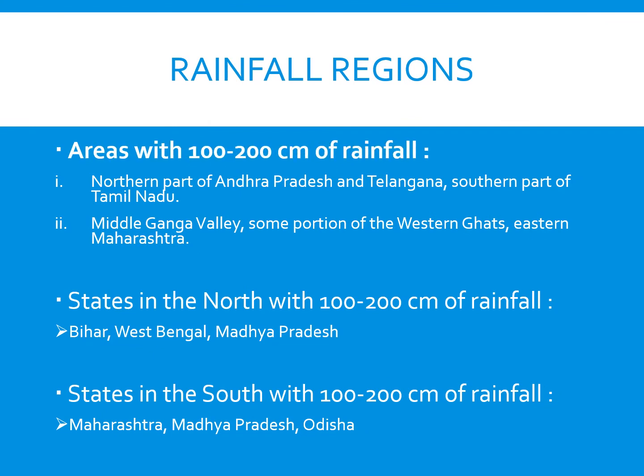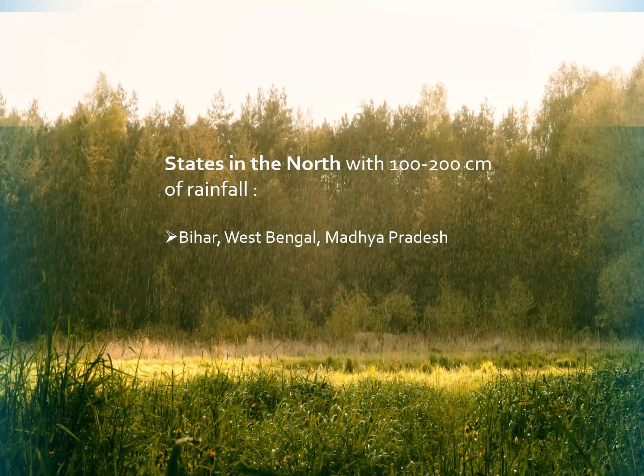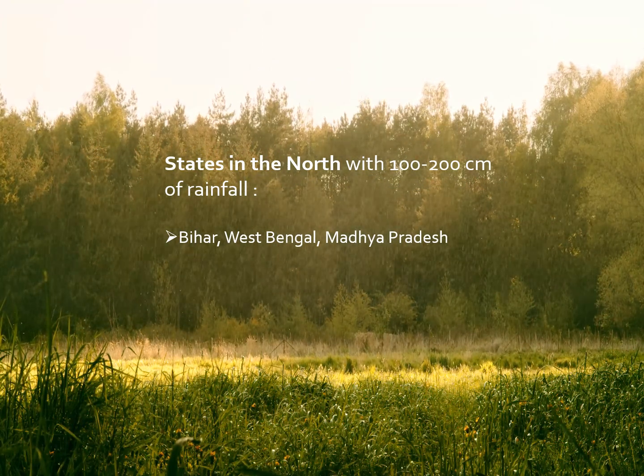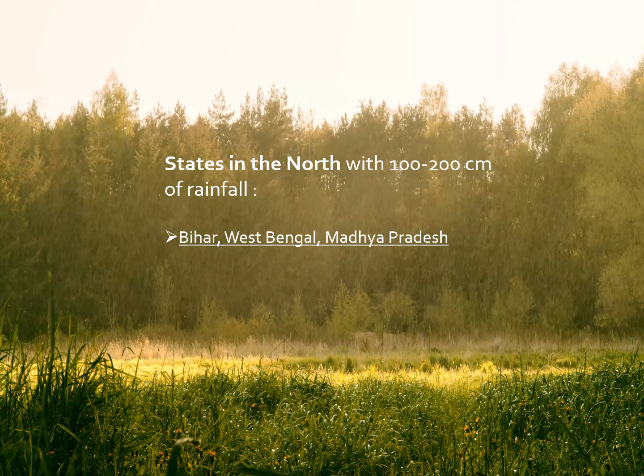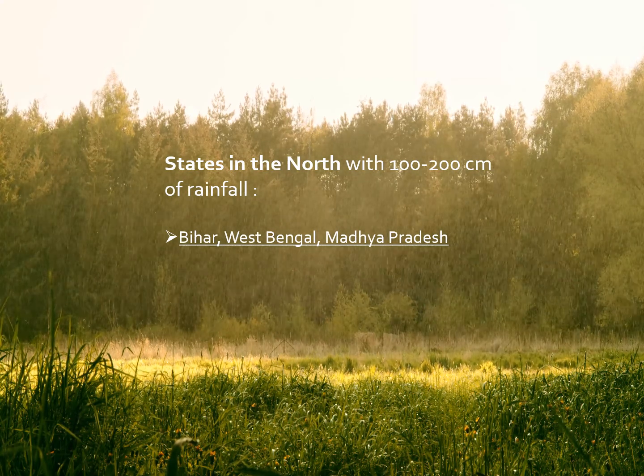Areas with 100 to 200 cm of rainfall form the moderate rainfall region. This region receives rainfall ranging from 100 to 200 cm per annum. Areas included in this region are: the northern part of Andhra Pradesh and Telangana, southern part of Tamil Nadu, the Middle Ganga Valley, some portions of the Western Ghats and eastern Maharashtra. The states in the north are Bihar, West Bengal and Madhya Pradesh.